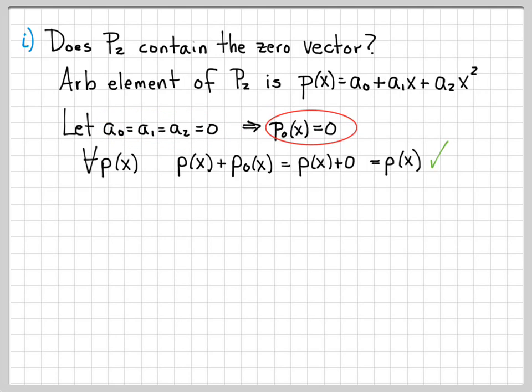Since this is a legitimate choice and this is a polynomial that is in P2, and since it satisfies this property, it is the zero vector and it is in P2, so P2 does contain the zero vector.